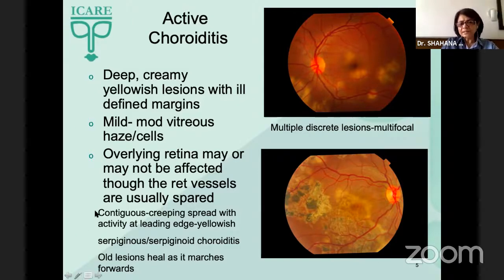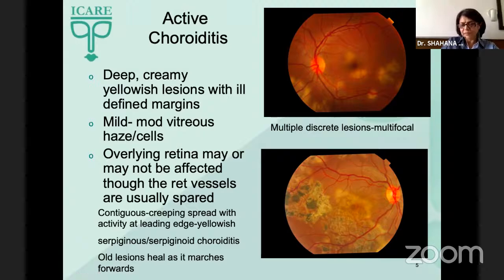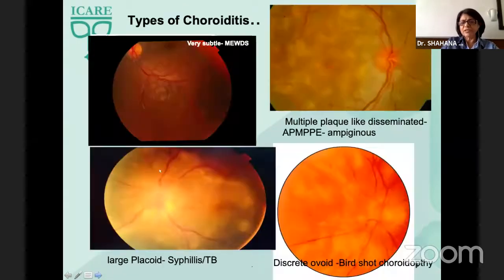There are multiple patterns in which choroiditis presents. If you have multiple discrete lesions, we label it as multifocal. But if you have a creeping advancement of the choroiditis with the leading edge being active whereas the rest of the lesions heal, we label it as serpigenous or serpigenoid.